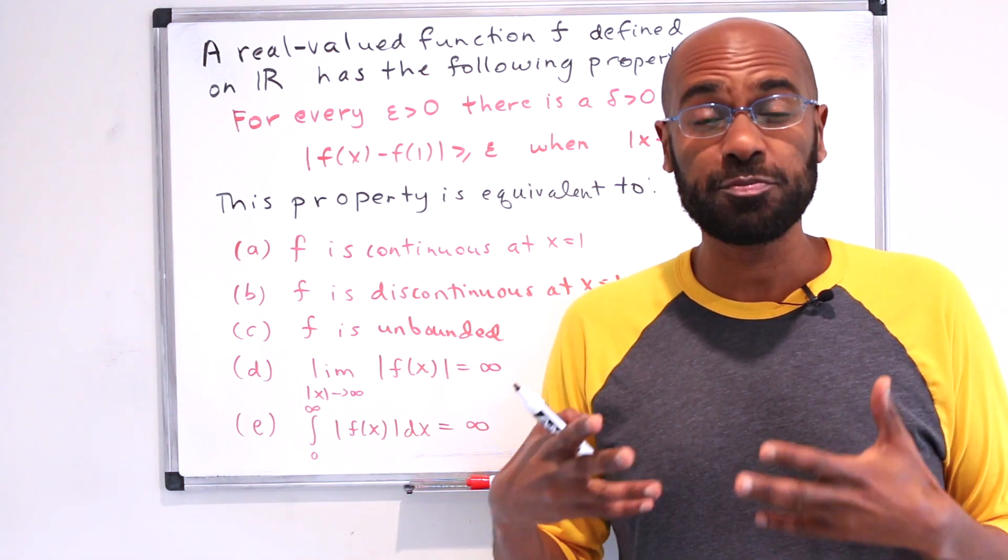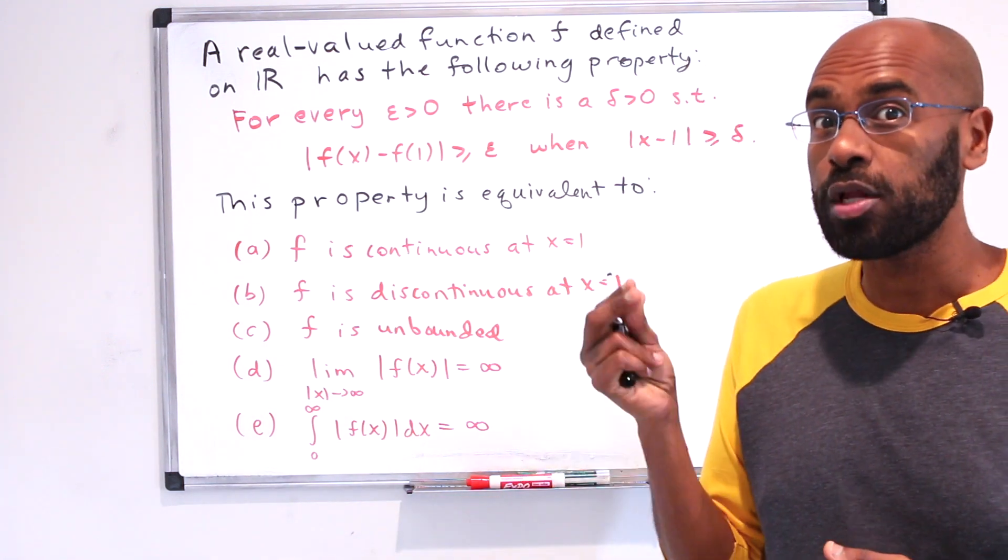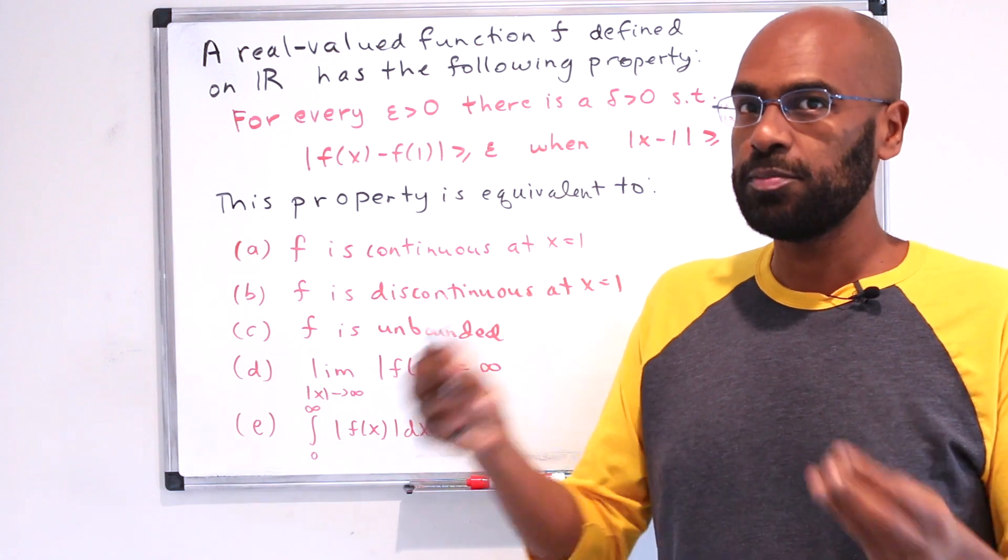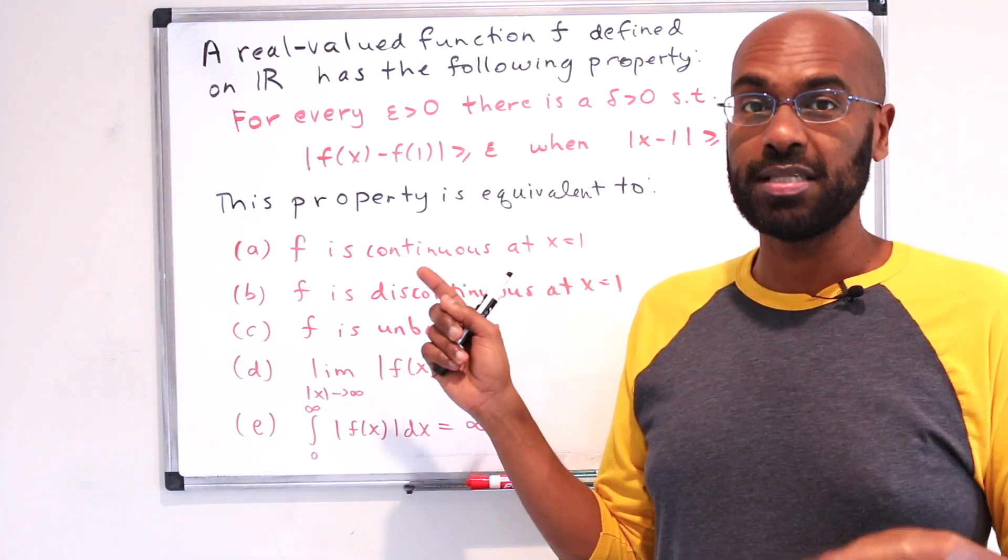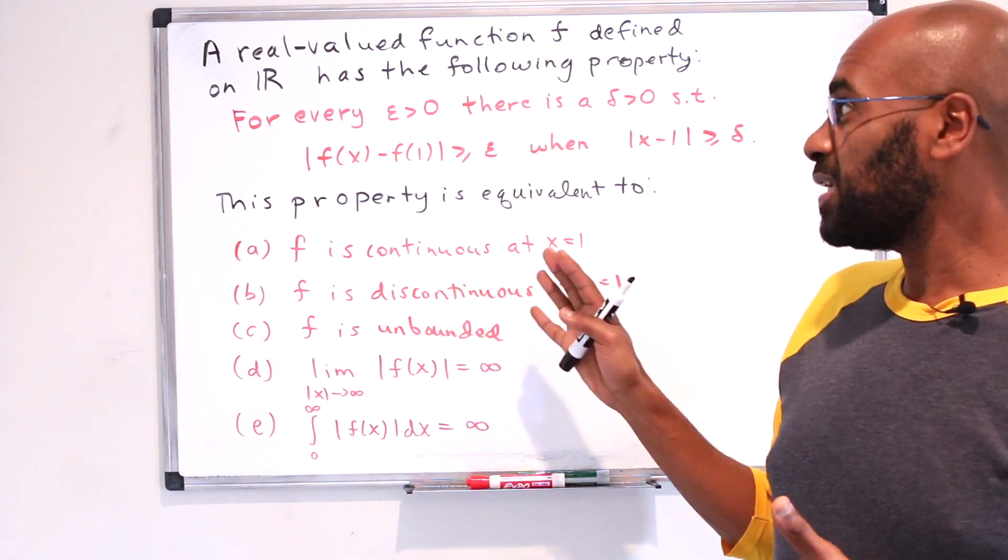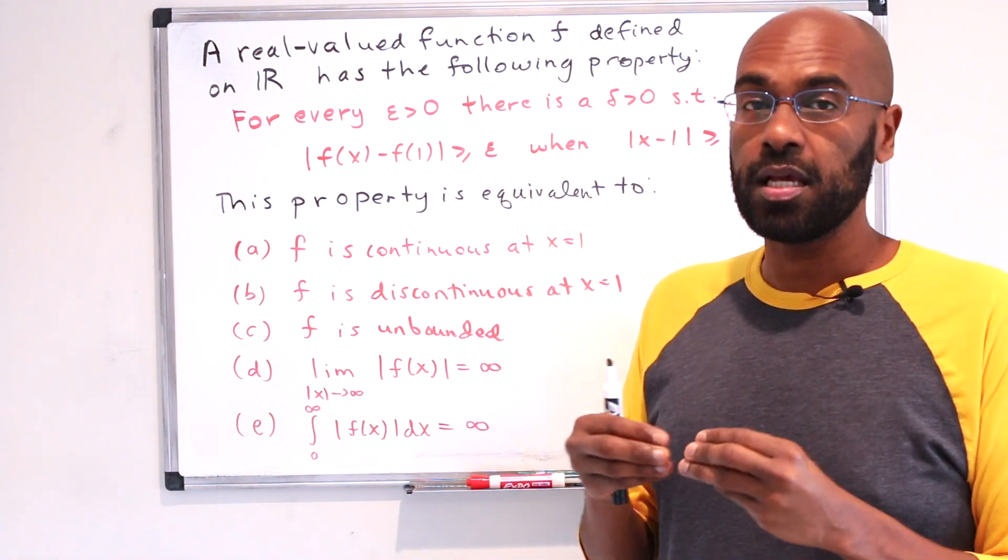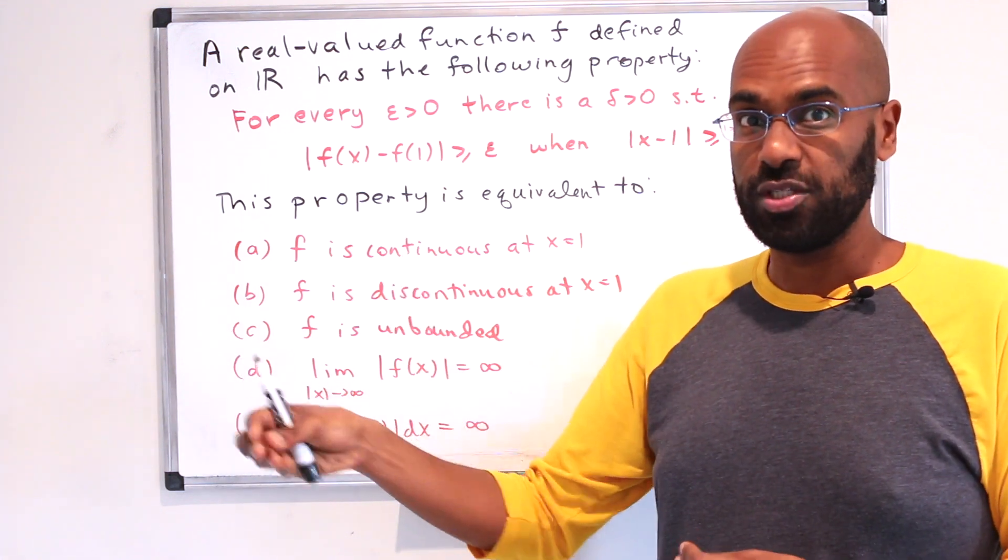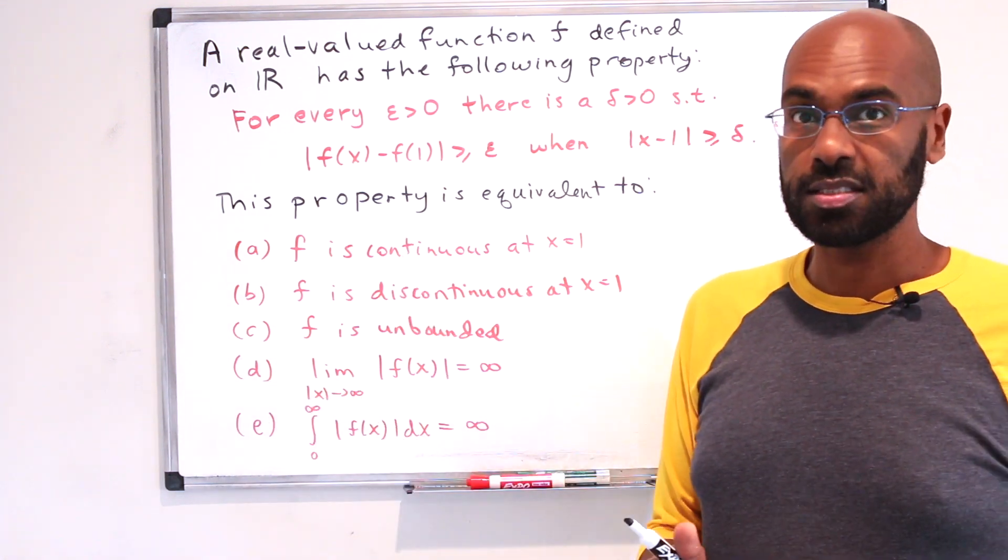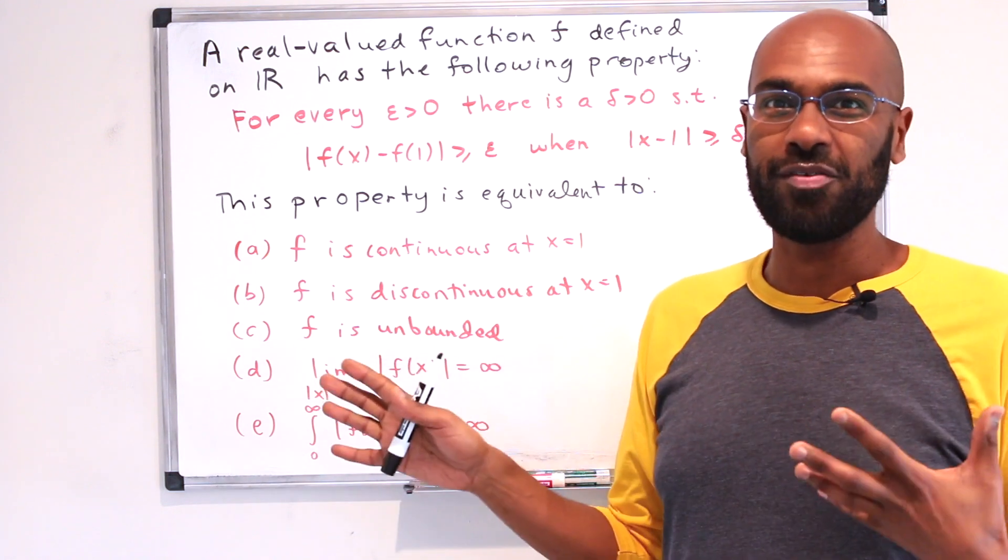The GRE Math Subject Test often has problems that test the conceptual understanding of an idea rather than its implementation, and this problem right here, which is from the current GRE Math Subject Test book, is a great example of the understanding of the nuances of the definition of the limit rather than its implementation, the delta epsilon definition that is. So we're going to dive in and check out how to solve this problem.